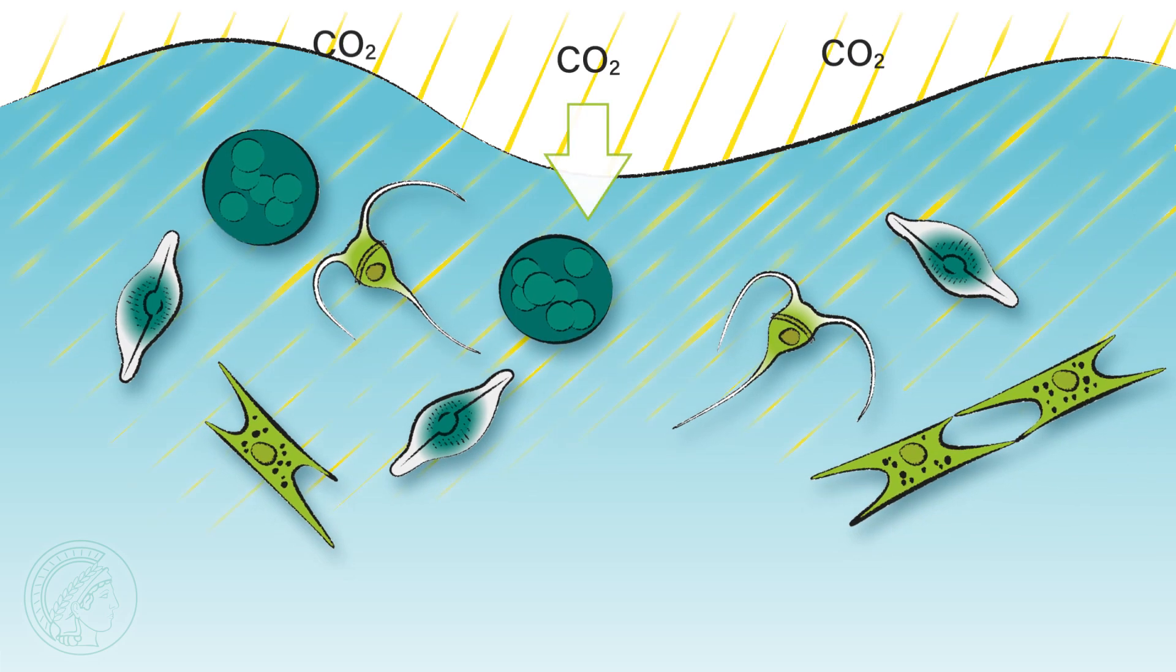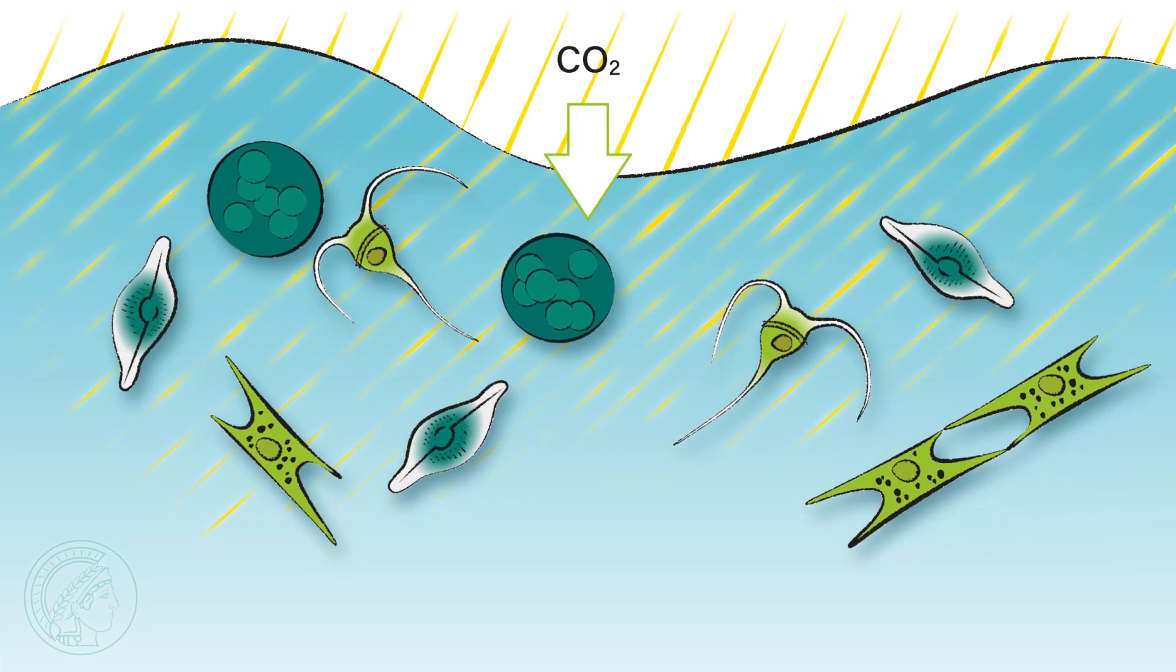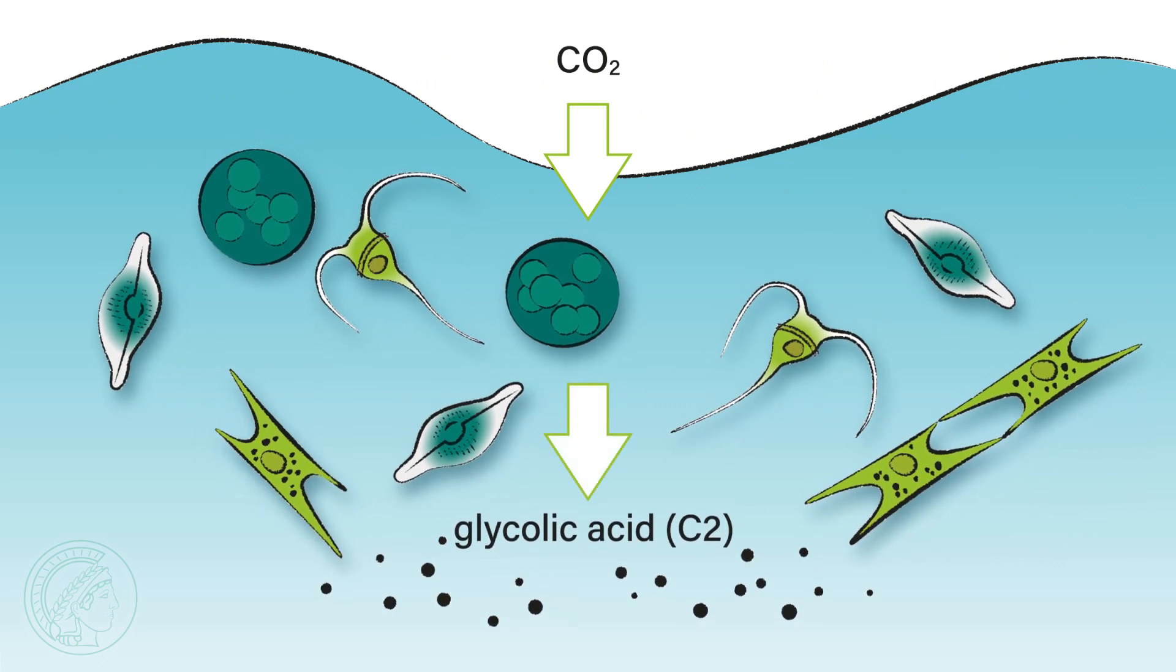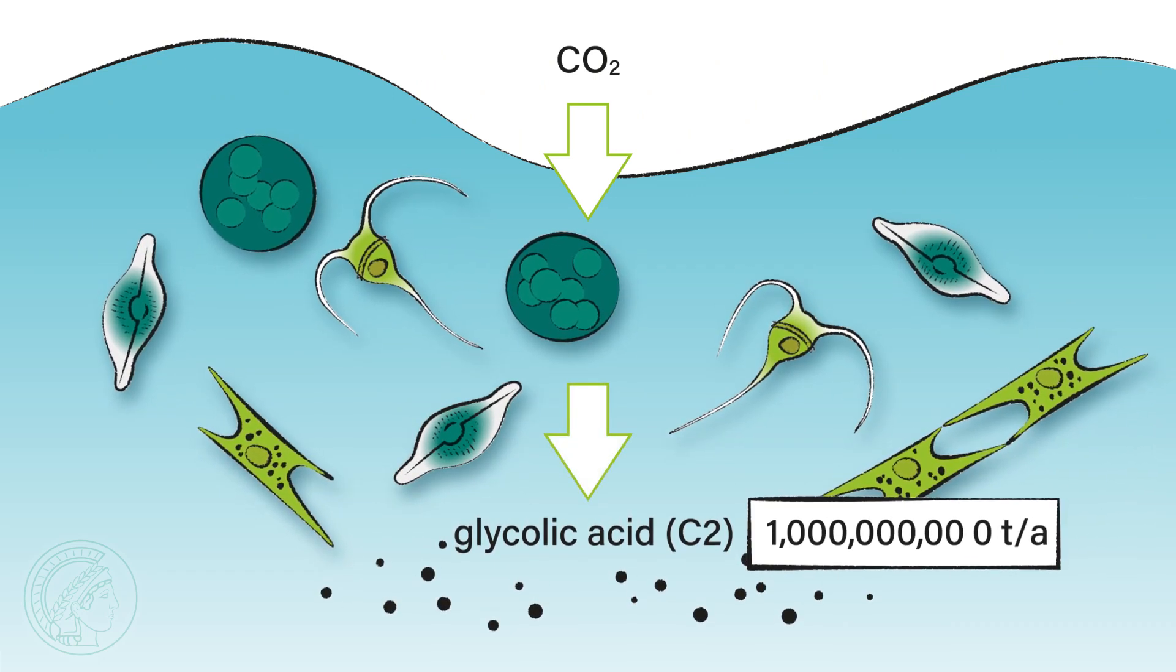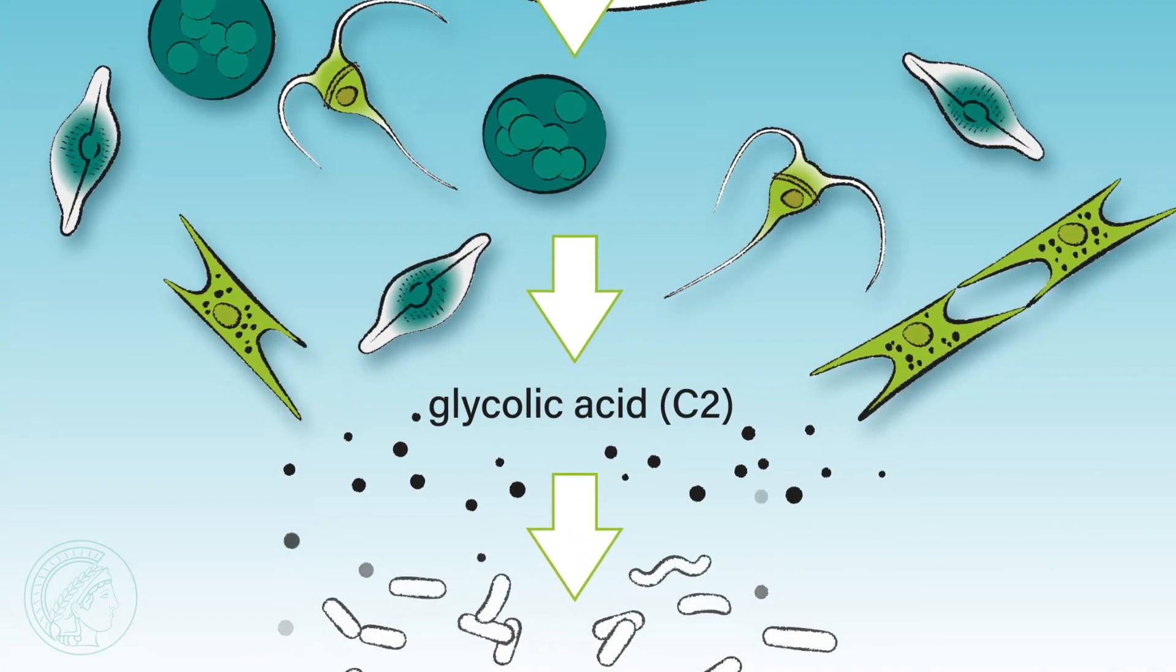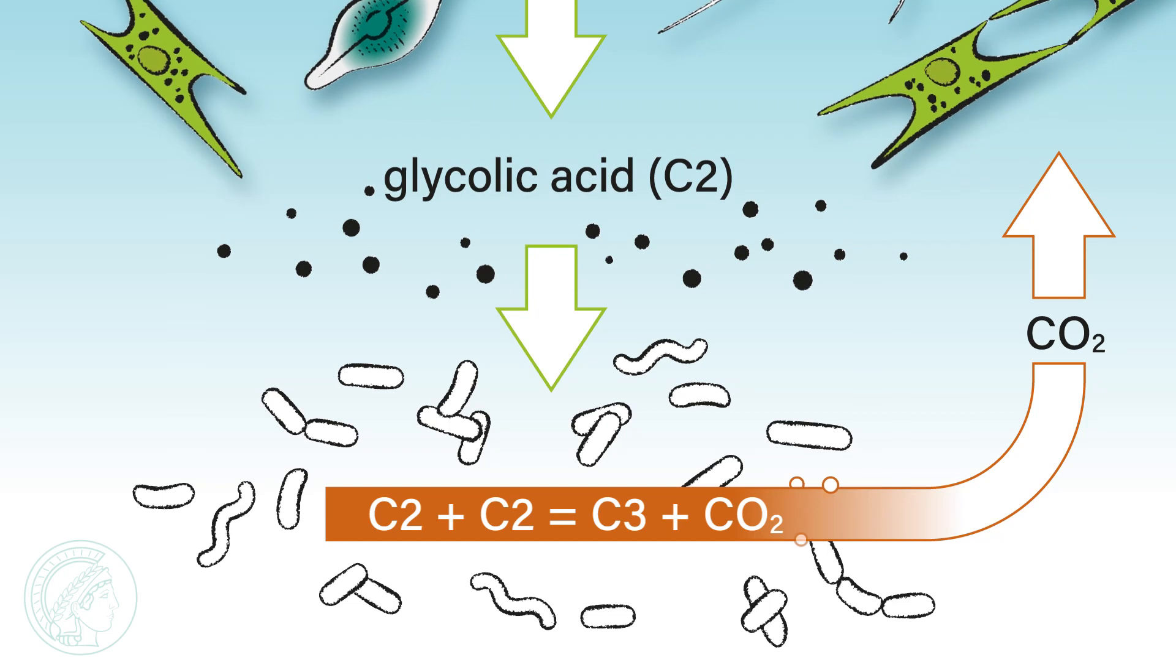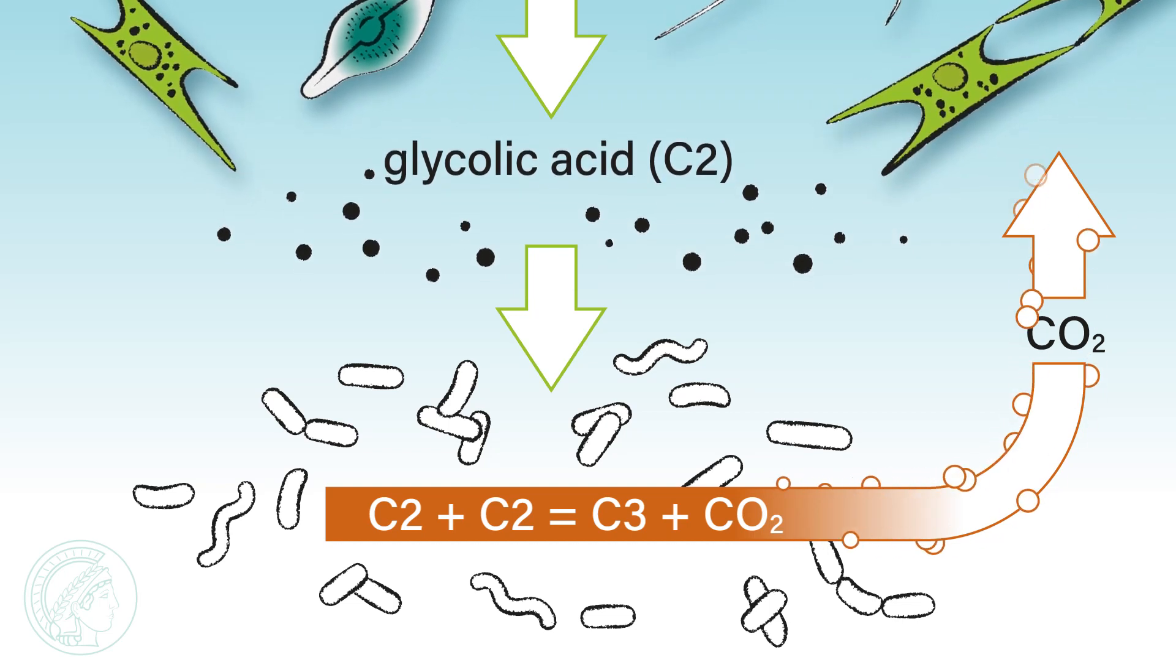Phytoplankton binds CO2 during photosynthesis. In doing so, however, it also excretes glycolic acid, roughly 1 billion tons per year. So far, it was assumed that when marine bacteria metabolize the glycolic acid, a part of the carbon is released as CO2.